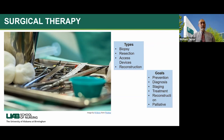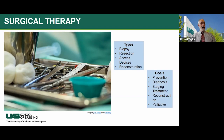The types of surgery you'll most likely encounter are biopsy, resection, access device implementation, and reconstruction. Biopsy is critical to obtain a tissue diagnosis. When resecting, you can also perform biopsies, and resection aims to debulk as much of the tumor as possible. Reconstruction is also important — for example, a breast cancer patient who has had a mastectomy may need reconstructive surgery.